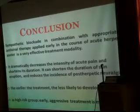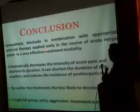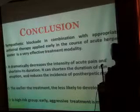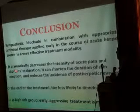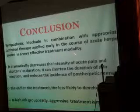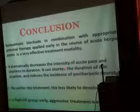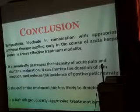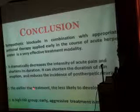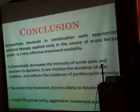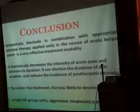In conclusion, sympathetic blockade in combination with appropriate antiviral therapy applied early in the course of acute herpes zoster is a very effective treatment modality. It dramatically decreases the intensity of acute herpes zoster pain and shortens its duration. It can shorten the duration of skin eruption and reduce the incidence of post-herpetic neuralgia. The earlier the treatment, the less likely to develop post-herpetic neuralgia — in high-risk groups, aggressive early treatment is mandatory.